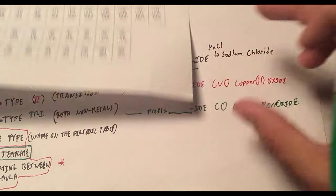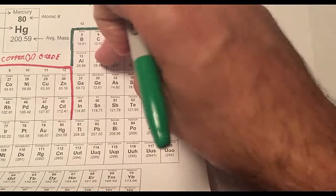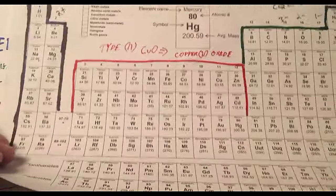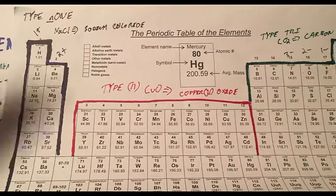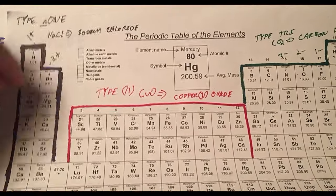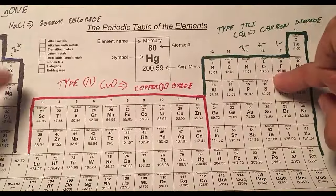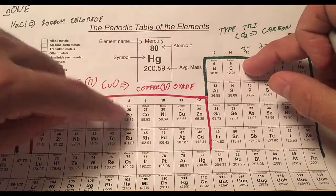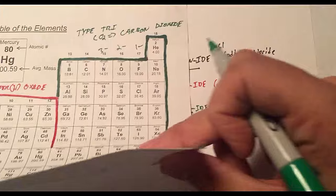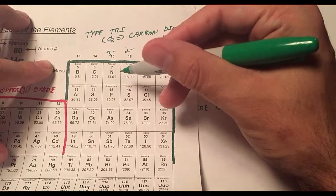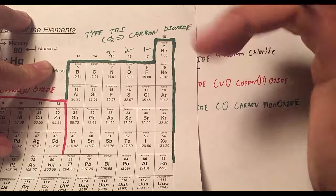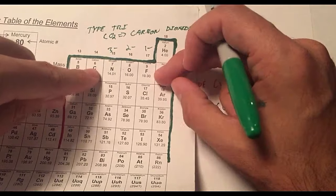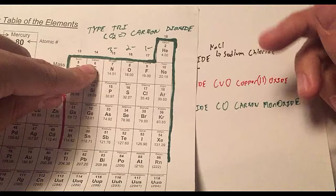Carbon and oxygen are both here. So to refresh this real quick, Type 1 or the first type, Type None. We don't have to use any Roman numerals, any prefix, anything. That's why it's Type None. And that's when you're dealing with something from here with something from here. Then when you have Type 2, you don't know the charge, so you got to use the Roman numerals. Something from here with something from here. Type Tri, you know their charges. However, you're dealing with two non-metals bonding together. So the charges are changing. The oxidation states are changing and that's a whole other topic. But that means you're dealing with something from here with something from here. Carbon monoxide, carbon dioxide, something of that sort.